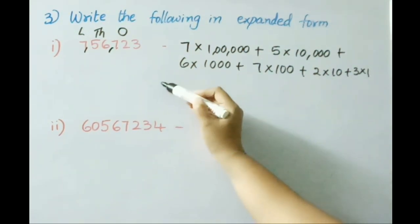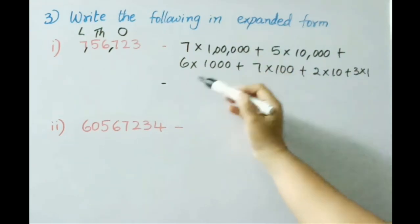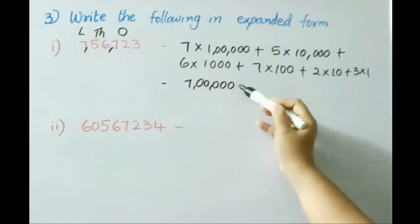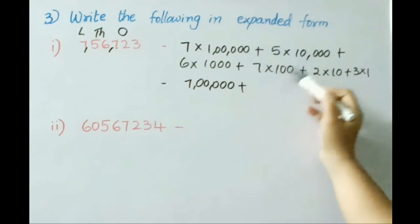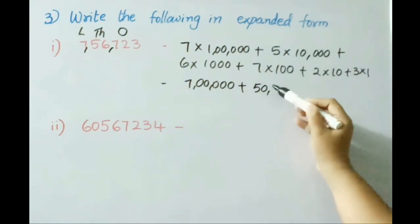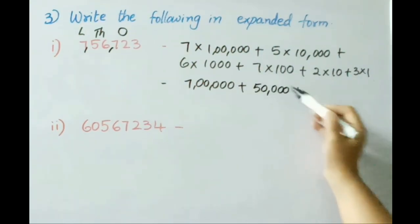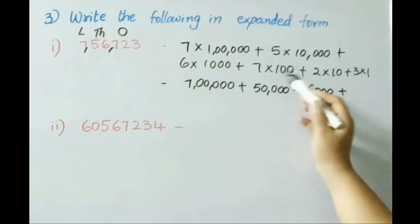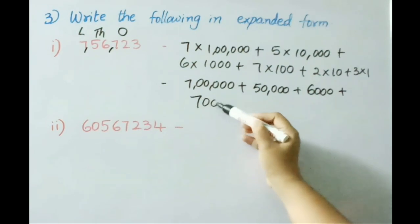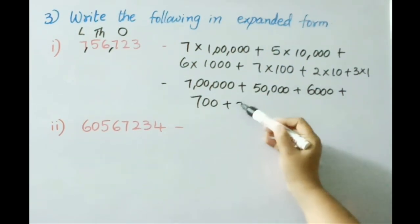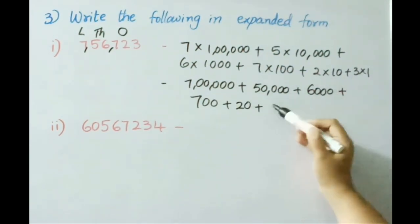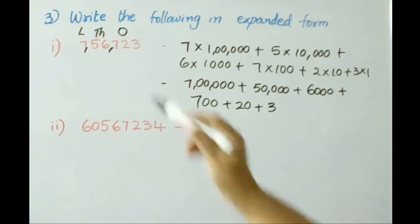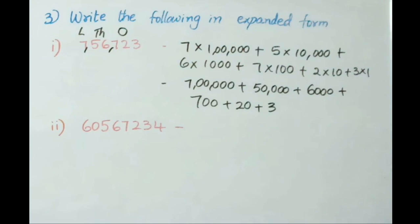Now see the second step: 7 × 1 lakh = 7 lakh, plus 5 × 10,000 = 50,000, plus 6 × 1,000 = 6,000, plus 7 × 100 = 700, plus 2 × 10 = 20, plus 3 × 1 = 3. So this is the expanded form for the number 7,56,723.